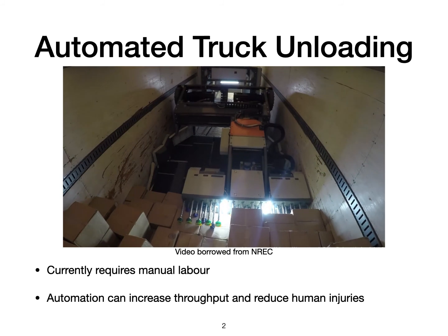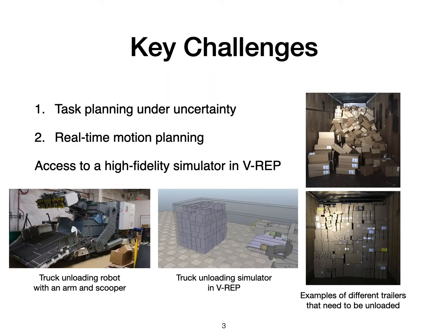However, to make the dream of automated truck unloading a reality, there are several key challenges. The foremost challenge is to perform sequential decision making under different forms of uncertainty. For example, we see a wide variety of box configurations inside trucks such as the ones shown on the right. In each of these scenarios, the robot is not able to perceive parameters like masses of the boxes or the configuration of boxes in the back. Under such uncertainty, we desire plans or sequences of actions that are robust and result in high throughput. In addition to sequential reasoning, we also need fast and efficient motion planning to execute plan trajectories in real time.